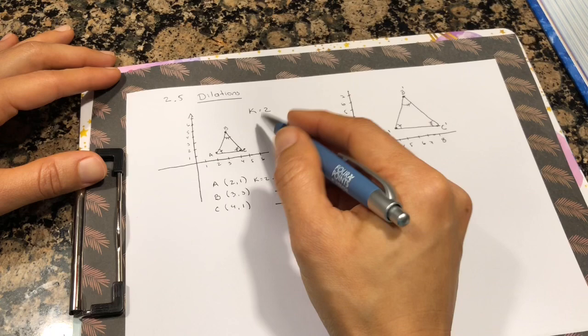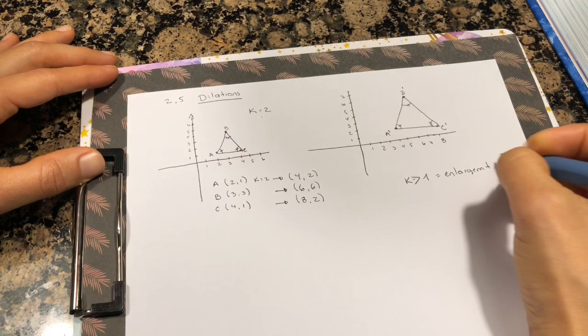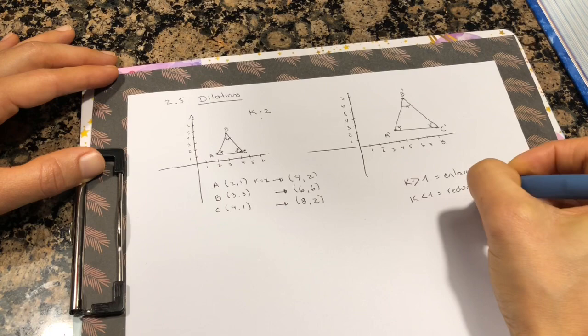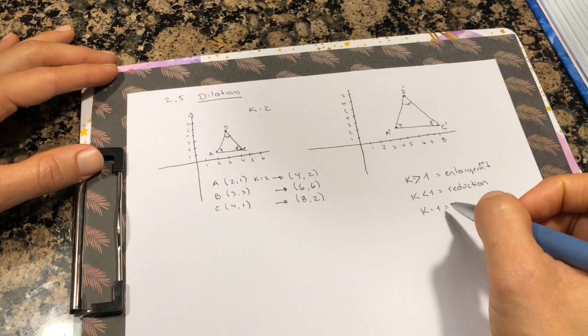A scale factor that is bigger than 1 will be an enlargement. You will have a bigger figure. Enlargement. In a scale factor that is less than 1 will be a reduction. How about if a scale factor is equal to 1? If you multiply by 1, there is no dilation. It remains the same. Because any number by 1, it will be the same. So this is not a dilation.